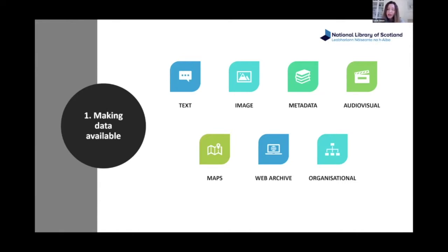We have organisational data such as financial data, and we've got challenges around things like maps and films — what does a film look like as data, what does a map look like as data? If you could pull out all the foundries and castles, hills and rivers from a map, what would that mean for users in terms of searching our collections? We're currently thinking through those. There's also web archive data with legal challenges, and we have a project called the Archive of Tomorrow, a Wellcome-funded project starting to explore those issues.